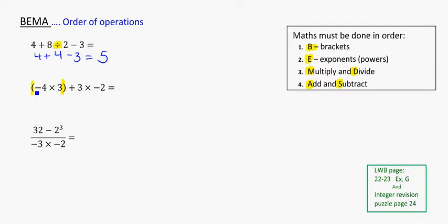So negative 4 times a positive 3, and I'm going to get a negative answer. So then 4 times 3 gives me 12. So negative 4 times 3 gives me negative 12. That gets rid of the brackets. And now I still have the plus 3 and the times of negative 2.